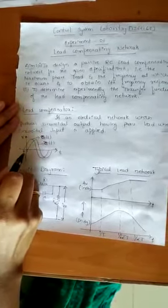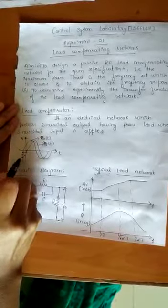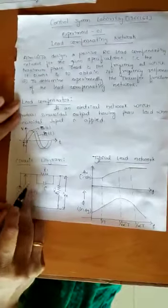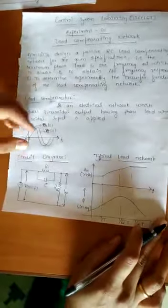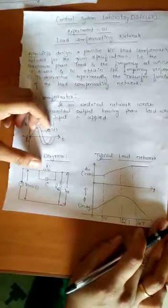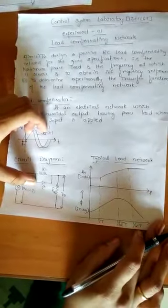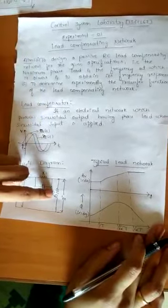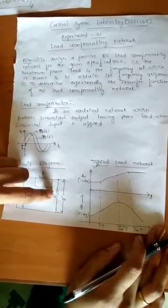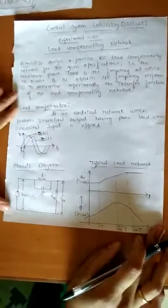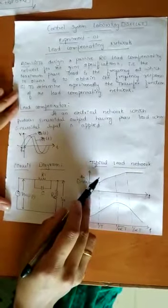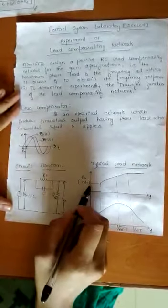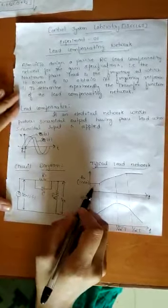This is the circuit for a lead compensating network. In this circuit, the resistance R1 is connected in parallel with the capacitor across the input side, and one more resistance R2 is connected across the output side V₀. This is the expected graph for a typical lead compensating network — this is the plot for voltage gain and this is the plot for phase.